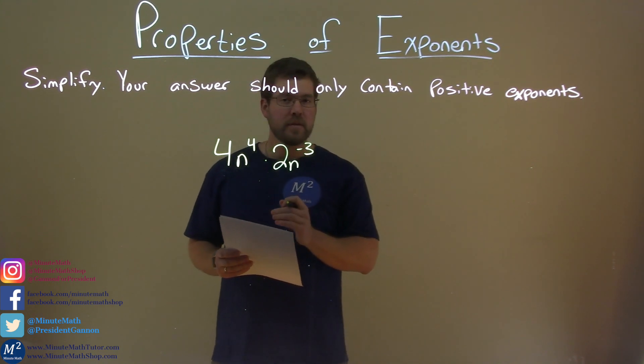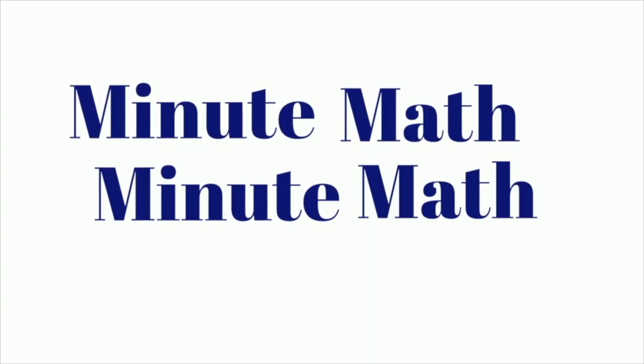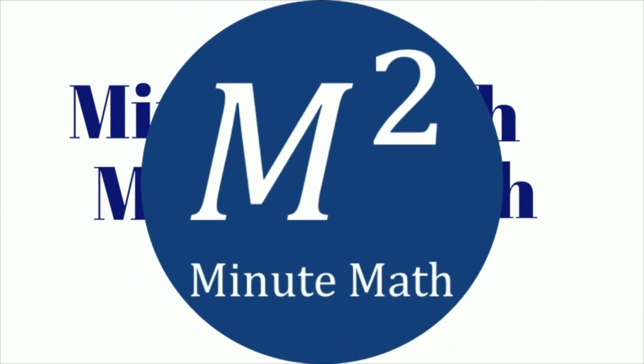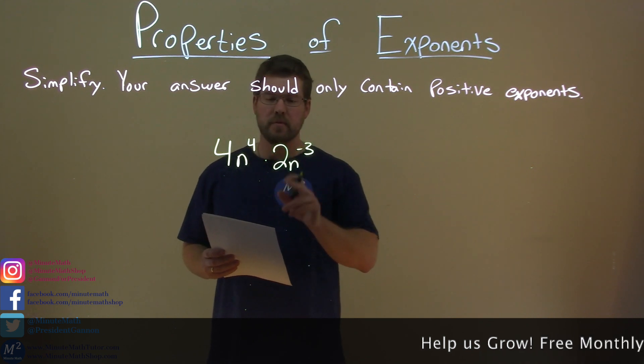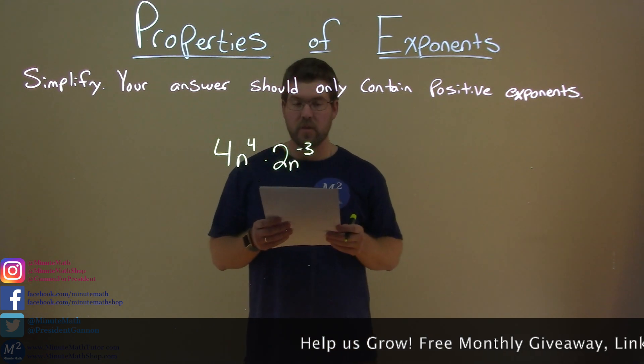If I was given this problem, we need to simplify 4n to the fourth power times 2n to the negative third power.